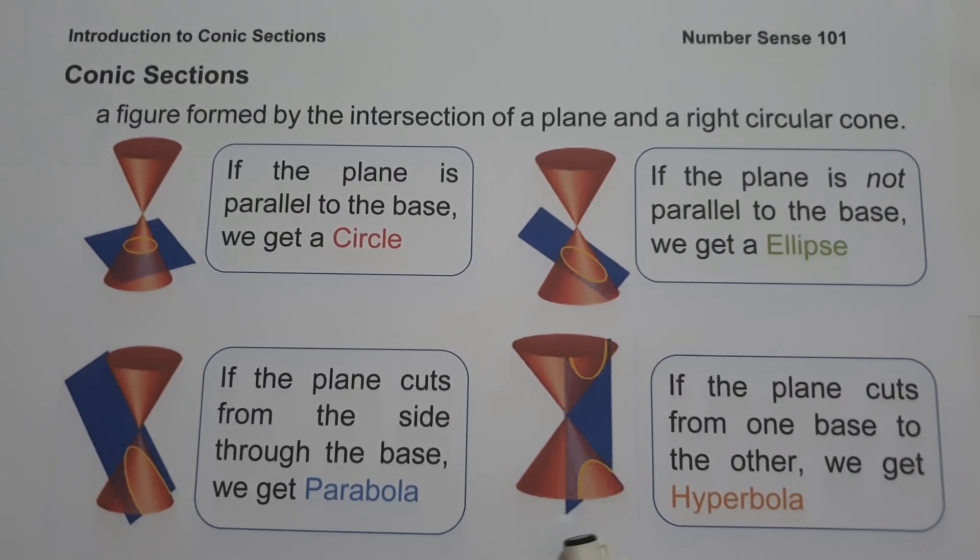Lastly, if the plane cuts all the way from one base to another, we get a hyperbola. A hyperbola is the locus of all points in the plane, the difference of whose distances from two fixed points is a constant. These are called conic sections because they are literally different cross sections of a cone.